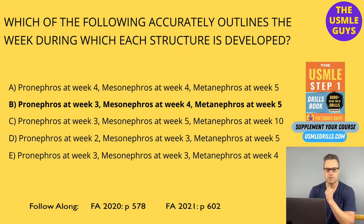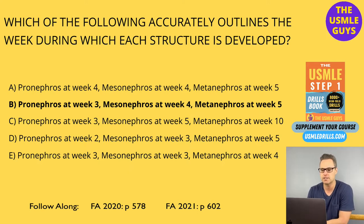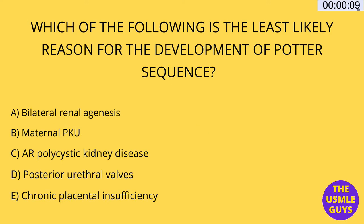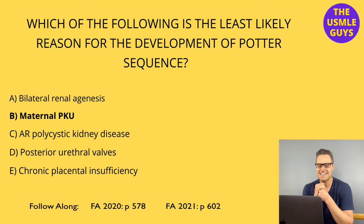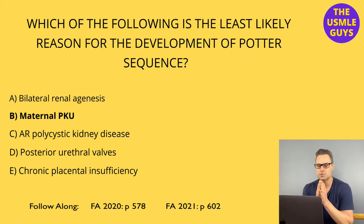Let's move on to the next question — another multiple choice. Hit the pause button, figure this one out, and come on back when you think you have the right answer. The correct answer is B. Potter sequence is a condition that develops as a result of oligohydramnios.